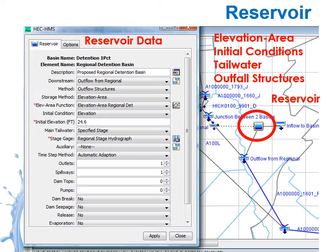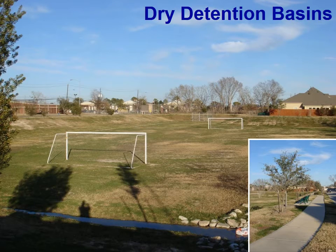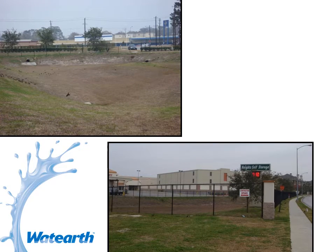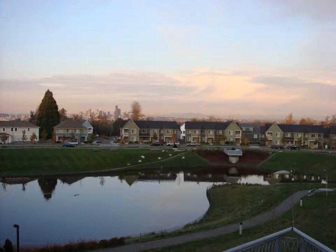Reservoir data can be fairly detailed, and this also applies to detention basins. Things like what type of outfall structure, what the tailwater conditions are, the initial water surface elevation within the reservoir, and the elevation-area or elevation-volume relationship. HEC-HMS is also a watershed-based model, so it has a lot more hydrology options than some other programs.